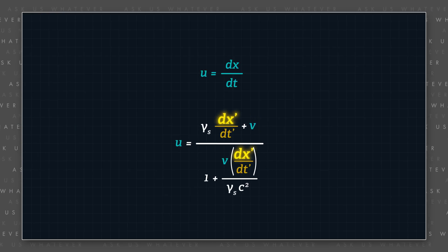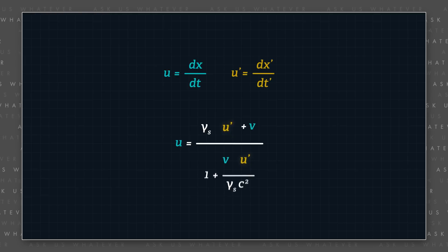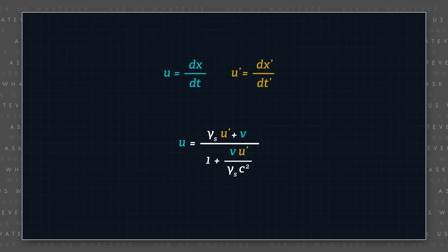The speed dx prime dt prime is the speed of the object or observer relative to frame s prime as measured in meters per second prime. Let's call that speed u prime. We then have speed u being equal to gamma s times u prime plus v, all divided by 1 plus v times u prime over gamma s times c squared.